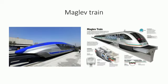Maglev train. Maglev is the word which is derived from magnetic levitation. It is a system of train transportation that uses two sets of magnets. The properties of electromagnetism and repulsion between magnets are used in Maglev train.